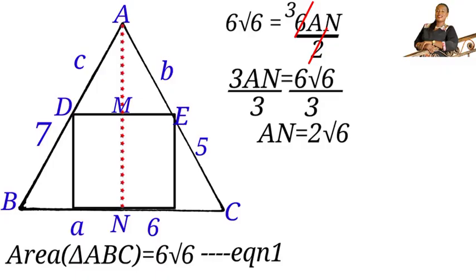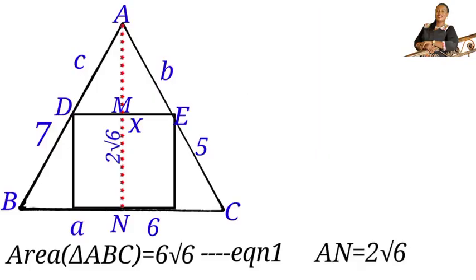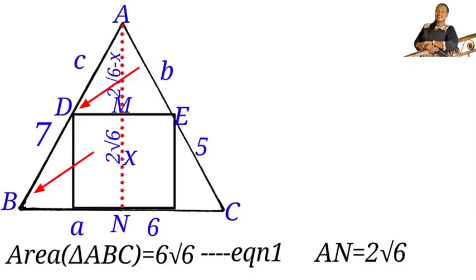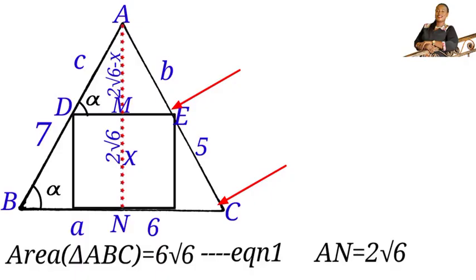Now we need to find the side length of the square. Let us call the side of the square x, so all four sides are x. Then the length MN will also be x, and the length AM will be two root six minus x. Looking at triangles ABC and ADE: angles B and D are equal since they are corresponding angles — call this angle alpha. Similarly, angles at C and E are also equal corresponding angles — call this angle beta.